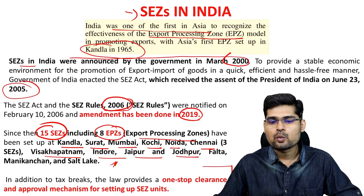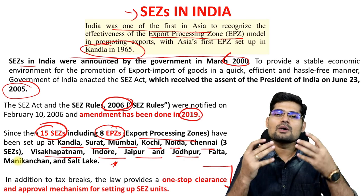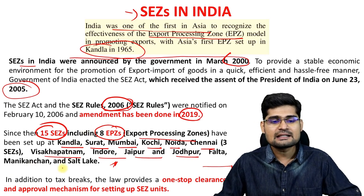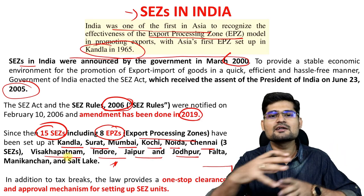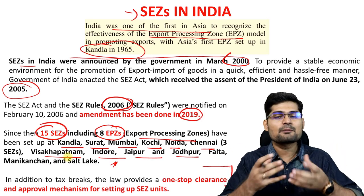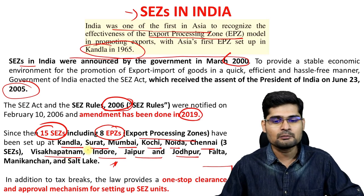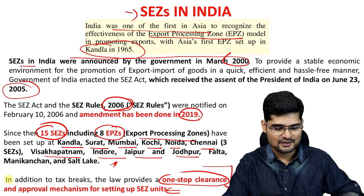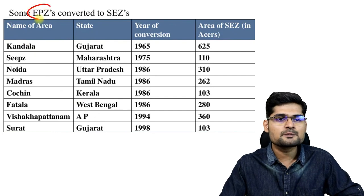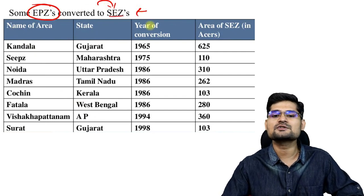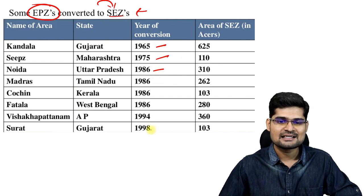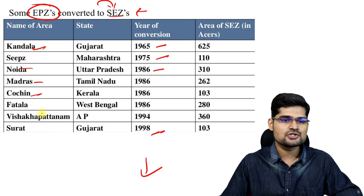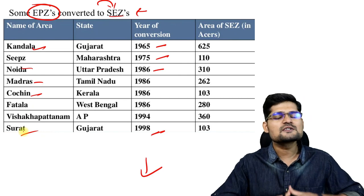One important point is the one-stop clearance — single window clearance — where you don't have to go to several ministries and departments to create or apply for SEZs. There is a single window counter mechanism. Many export processing zones have been converted to special economic zones in India, from 1965, 1975, 1986 to 1998 and today — Kandla, Noida, Madras, Kochi, Surat, Vishakhapatnam, and others.